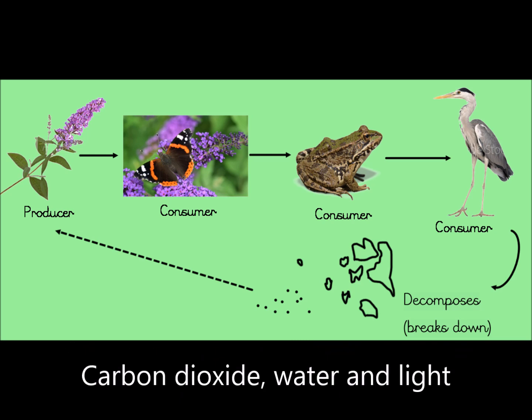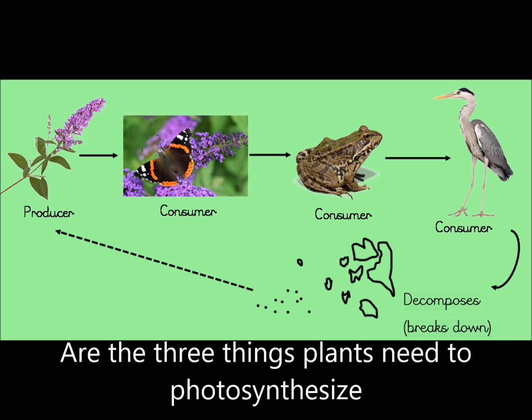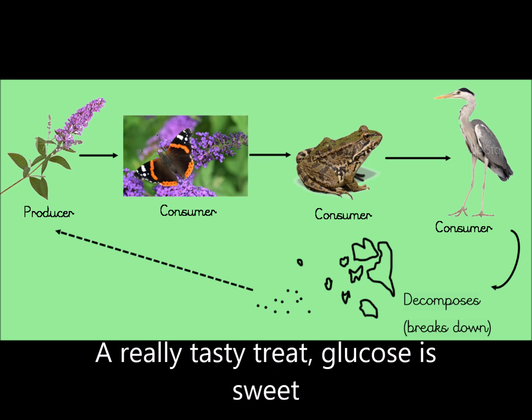Carbon dioxide, water, and light are the three things plants need to photosynthesize. A really tasty treat — glucose is sweet.